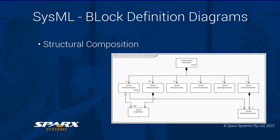Structural composition: the block definition diagram can be used to lay out the structural composition. For example, in the hybrid HSUV example supplied with the EA example model, we have the core structures including the power subsystem, the brake system, and the body system.